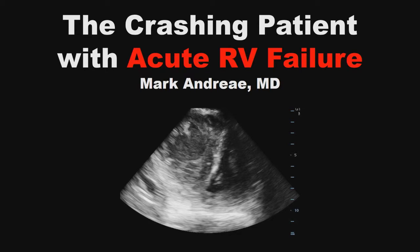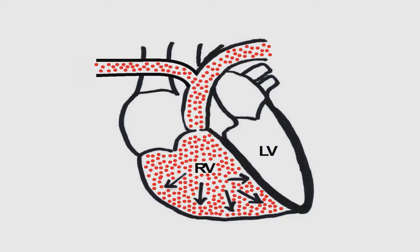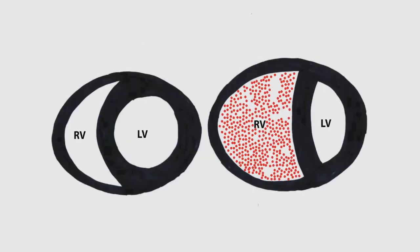It's hard to do a talk on the RV without talking a little bit about physiology. The RV is a thin-walled structure that's part of a low-pressure system built for compliance. But unlike the LV, it deals with pressure really poorly, and so when it sees any increase in afterload, it dilates. But the RV and the LV share the fixed volume of the pericardium, and so when the RV dilates, it pushes the septum into space that's owned by the LV. And when the LV gets compressed to the point of being underfilled, systemic cardiac output falls.